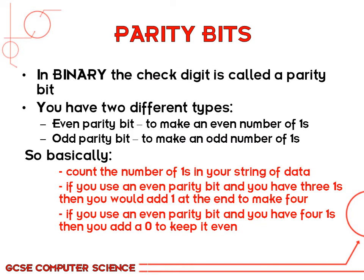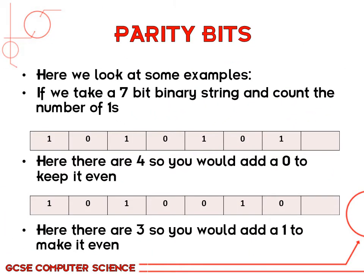In binary, the check digit is called a parity bit. There are two types of parity bit: an even parity bit and an odd parity bit. The idea is to make either an even or odd number of ones in a byte. So basically you take a string of seven bits — like 1 0 1 0 1 0 1 — and count the number of ones. In this case there's four, so if you were going to use an even parity bit you'd put a zero at the end to keep the number of ones even. It sounds complicated but it's a lot easier than it looks once you see the examples.